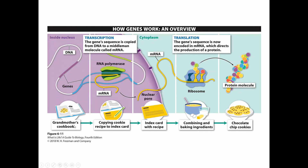Grandma doesn't want her cookbooks to leave her kitchen, so to do anything with this information we have to write our own copy. You go to grandma's kitchen with an index card and copy the recipe down, then take that index card to your own kitchen, bring your ingredients together, and bake your end product — chocolate chip cookies. Similarly, we go from DNA to RNA to protein through two processes called transcription and translation.